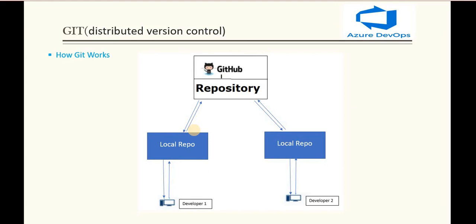To get rid of this problem, Git works as a distributed version control — it was introduced to resolve the issues of centralized version control. So Git basically works in a different way. Instead of the developer directly pushing code into the repository, when the developer clones that particular repository, they clone it into a local repository and start working with that local repo instead of the main branch or main repository.